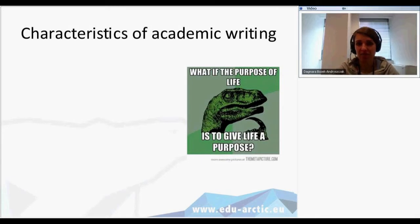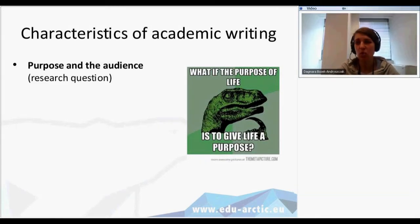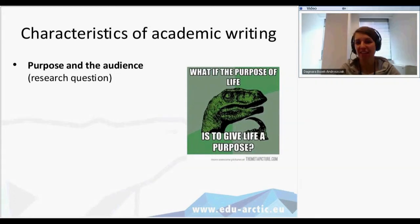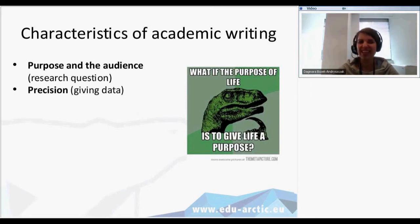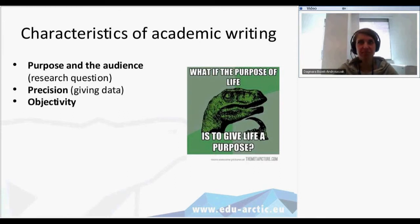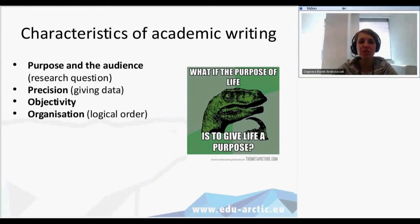Characteristics of academic writing: purpose and audience. Who is the receiver? Who is the audience of our message? We need to ask a research question first before we start writing something concerning our main research. What is the aim of the article? What is the aim of the scientific paper? Precision — we need to be precise in giving data, in giving terms, and some references to other sources. Objectivity — this is not an article we are going to publish in a newspaper; the aim is not to give an opinion or express our emotions. Objectivity is one of the very important characteristics of academic writing.